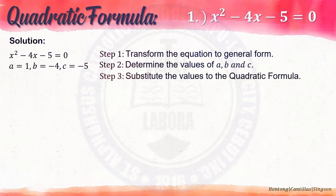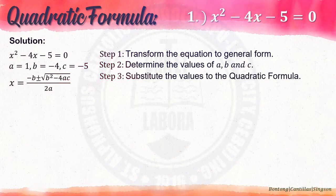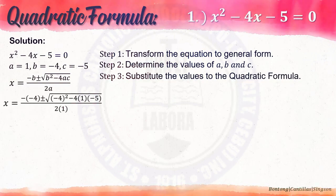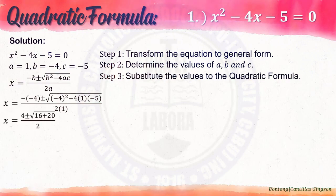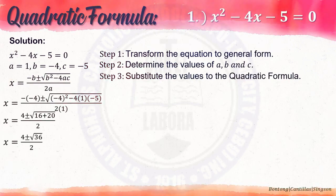Step 3: Substitute the values into the quadratic formula. The quadratic formula is x equals negative b plus or minus square root of b squared minus 4ac over 2a. Substituting the values: x equals negative times negative 4, plus or minus square root of negative 4 squared minus 4 times 1 times negative 5, all over 2 times 1. Negative times negative 4 is 4. Negative 4 squared is 16. Negative 4 times 1 times negative 5 is positive 20. And 2 times 1 is 2. So x equals 4 plus or minus square root of 36 over 2, because 16 plus 20 is 36.